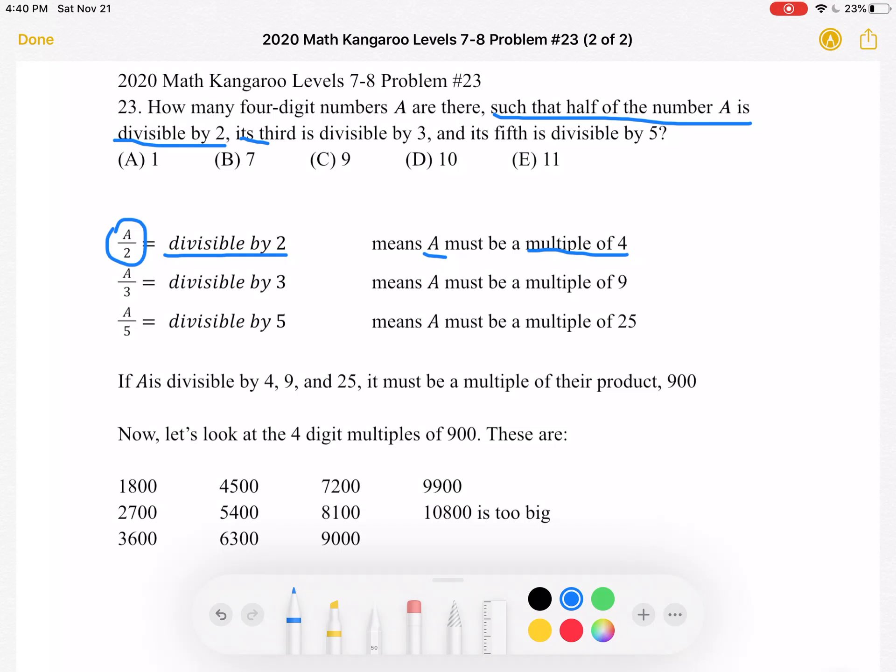We also know that its third is divisible by 3. So A over 3 is divisible by 3, meaning that A must be a multiple of 9.